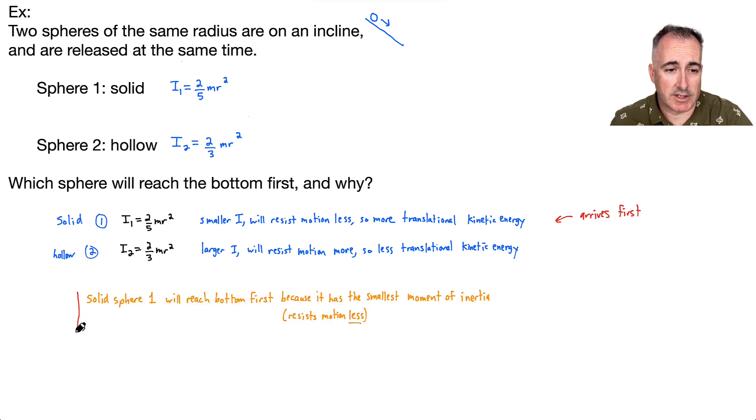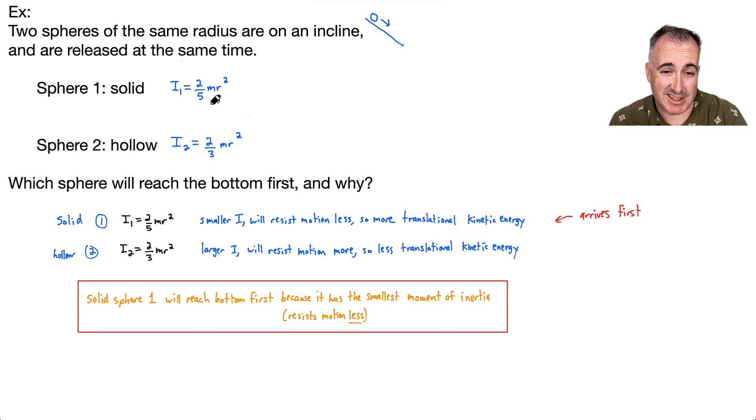And so we could say that solid sphere number one will reach the bottom first. And again, that's just because it has the smallest moment of inertia, so it resists the motion least. The basic idea is that the definition of moment of inertia is how much it resists the motion. So whichever one resists the least will be the easiest to push around and make changes to.